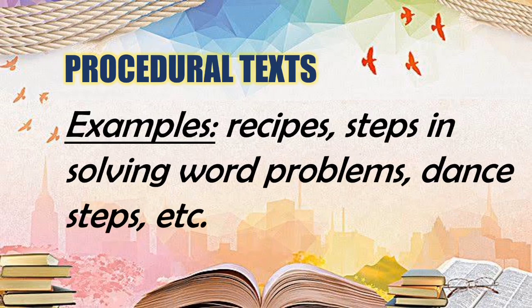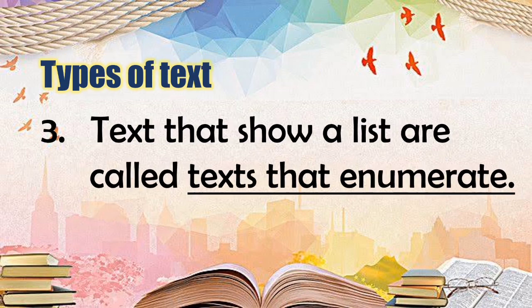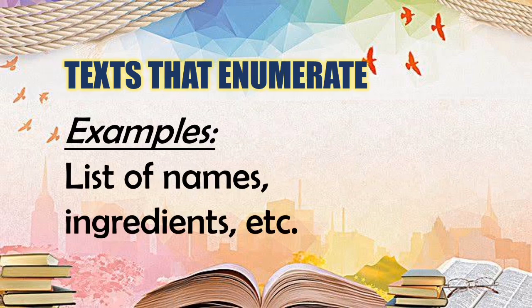There are some texts that tell procedure, directions, or steps on how to do something. These are procedural texts. Examples are recipes, steps in solving word problems, dance steps, and so on. The third type of text is the text that shows a list, which is called texts that enumerate. Examples can be lists of names, ingredients, and many other lists.